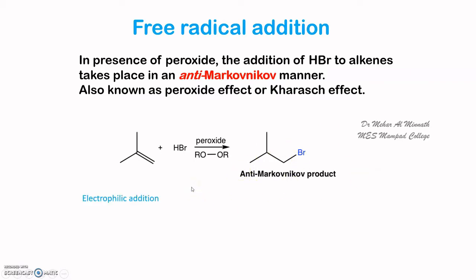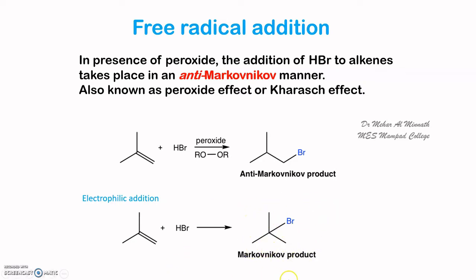During electrophilic addition, bromine gets added to the most substituted carbon, giving the Markovnikov product. But during addition of HBr in the presence of peroxide, we get the anti-Markovnikov product. The reason behind this is the stability of the free radical formed during the reaction.